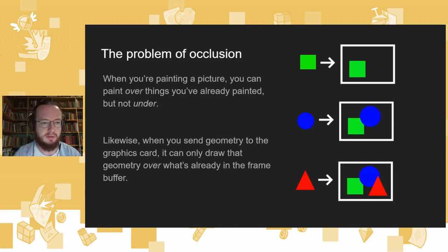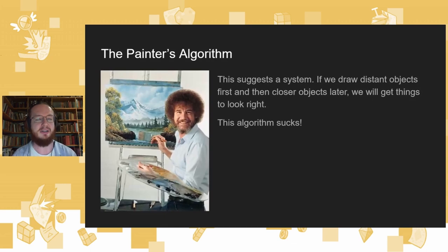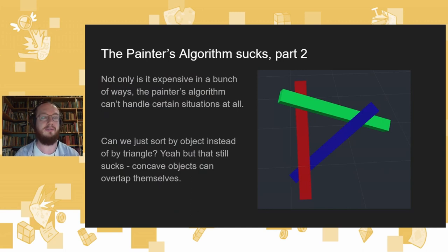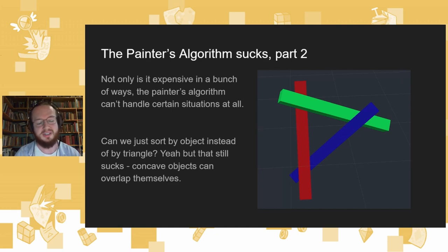So what we can do is what painters do — something called the painter's algorithm — where we draw distant objects first. We draw the mountains first, then we paint the trees over the top of them, and so on. With all due respect to painters everywhere, this algorithm sucks. Why does it suck? First off, it's quite expensive. You've got to sort things from front to back every frame, not just once, because if the camera moves, the distances change. Every frame is its own painting. Some mountain that's in the background now might be in the foreground later. So the CPU gets loaded up with this sorting algorithm we've got to run all the time.